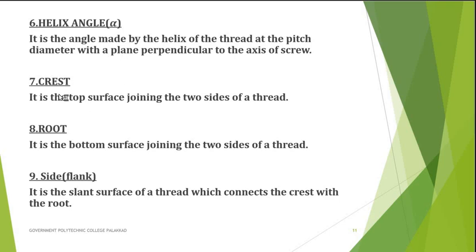Next is crest and root. Crest is the top surface joining the two sides of a thread, and root is the bottom surface joining the two sides of a thread. The side or flank is the slant surface of a thread which connects the crest with the root.